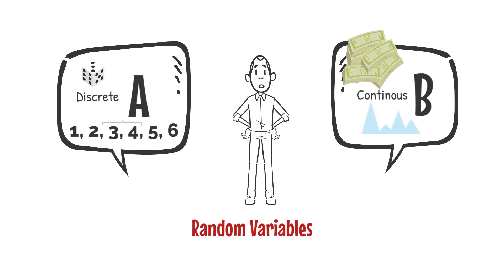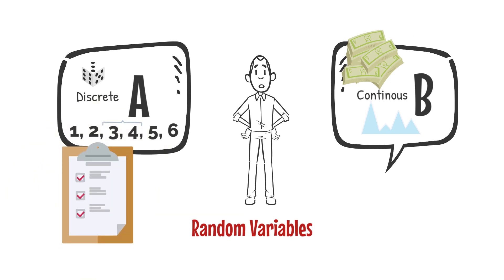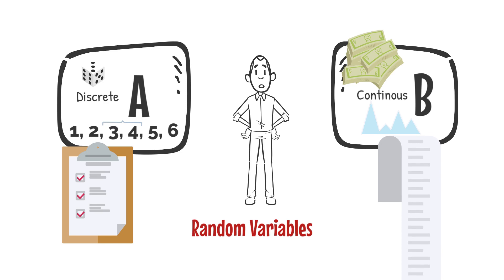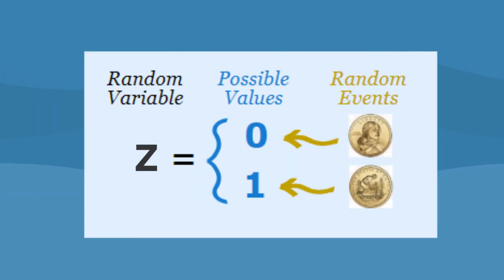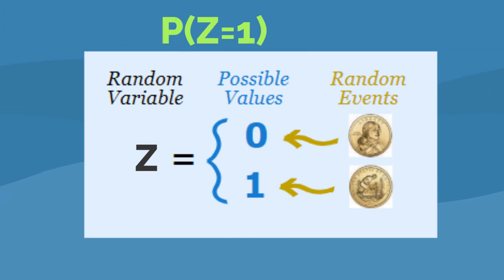The major difference between discrete and continuous random variables is that we can list the outcomes of a discrete random variable, while there is no possible way to list all potential values for a continuous random variable. Going back to our coin flip, the probability of getting a head means we can get heads in one of two outcomes, so the probability of Z equals 1 is one half.